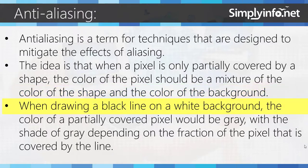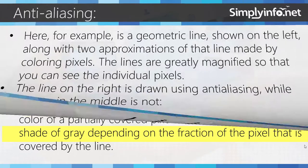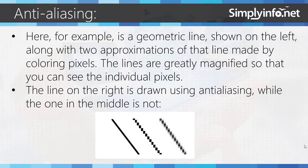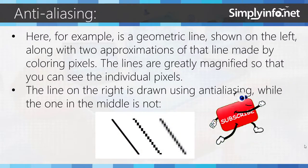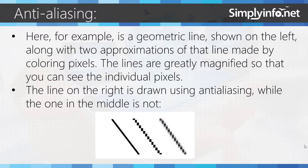When drawing a black line on a white background, the color of a partially covered pixel would be gray, with the shade of gray depending on the fraction of the pixel that is covered by the line. Here, for example, is a geometric line shown on the left along with two approximations of that line made by coloring pixels. The lines are gently magnified so that you can see the individual pixels. The line on the right is drawn using anti-aliasing while the one in the middle is not.